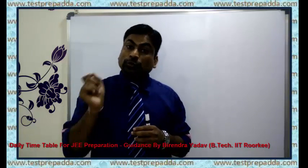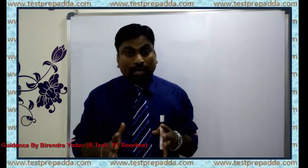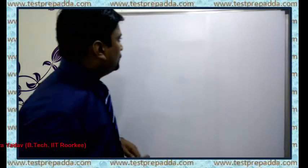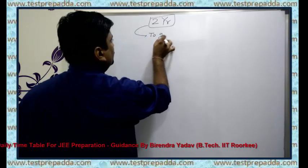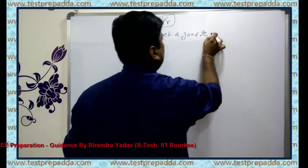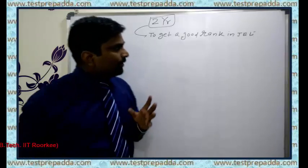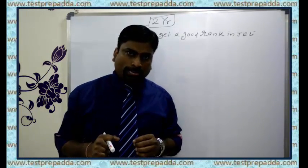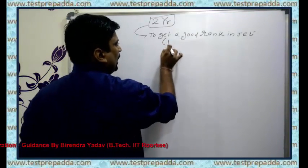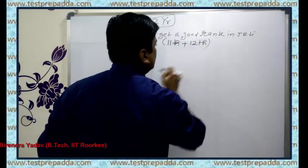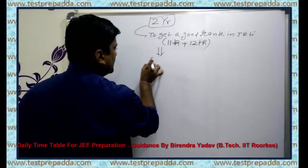It is very important to prepare a timetable or schedule on a daily basis. First, divide your targets. Your main target — a 2-year target — is to get a good rank in JEE. You can write a specific rank in your diary. Now, divide that goal: cover the 11th and 12th syllabus, and divide this 2-year goal into 6-month goals.